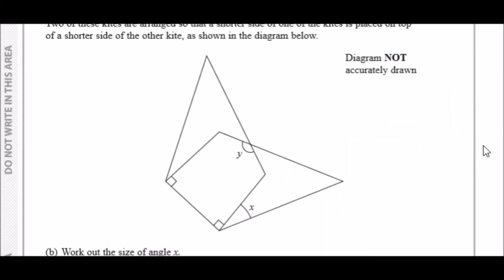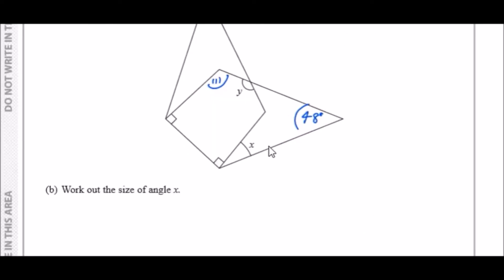48 degrees. We know this whole one here is 111. And this one's also 111, but it's split by 90 plus x, meaning 90 plus x equals 111.